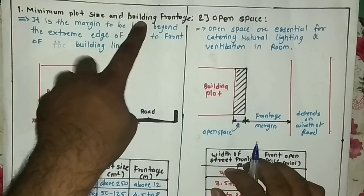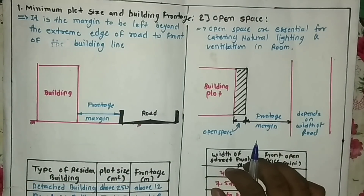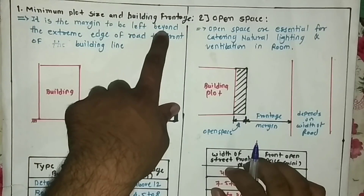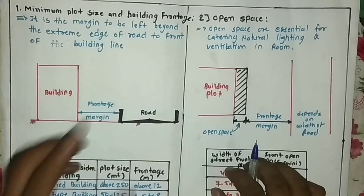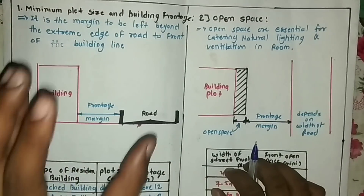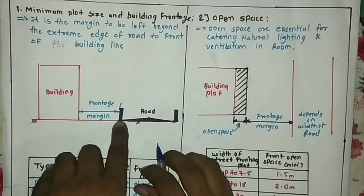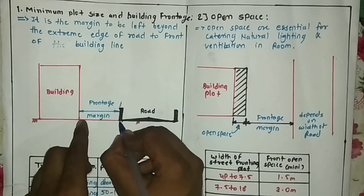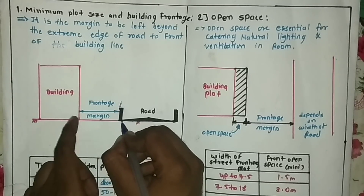In this video I am going to explain the first building bylaw: minimum plot size and building frontage. What is the minimum plot size and what should be the minimum frontage you need to keep from the road? The frontage is the margin to be left beyond the extreme edge of the road to the front line of the building.